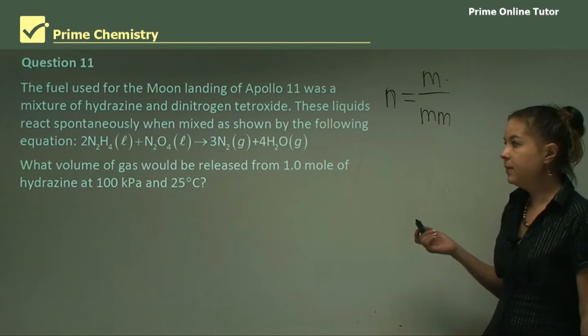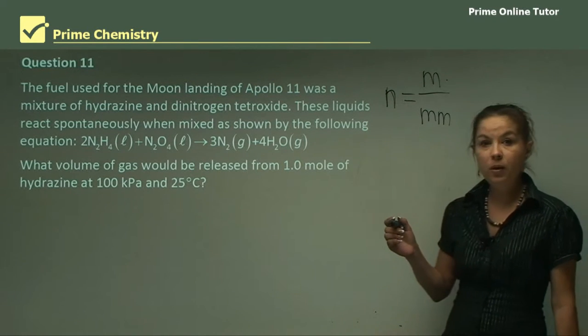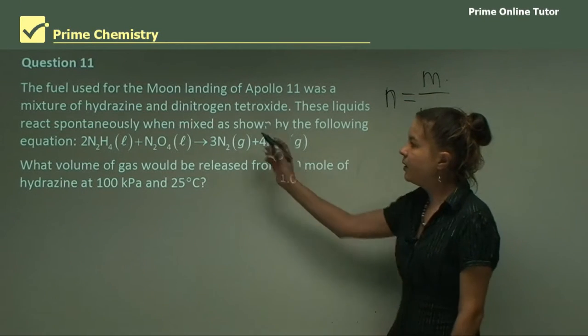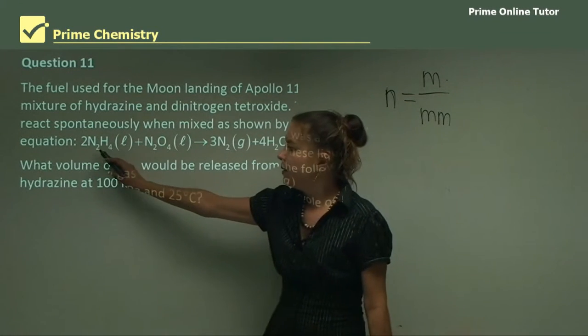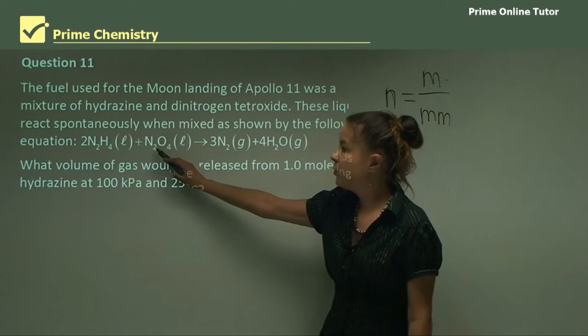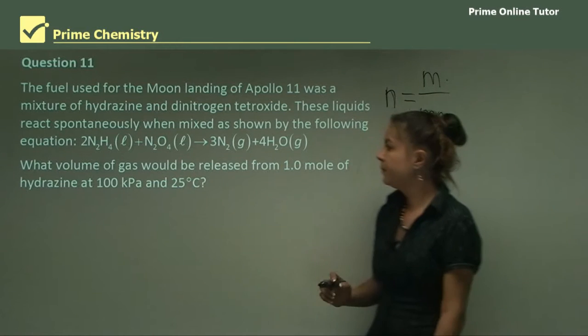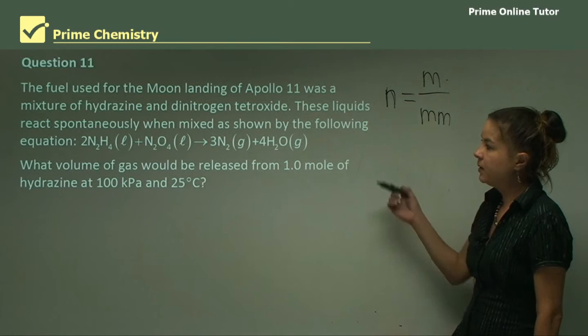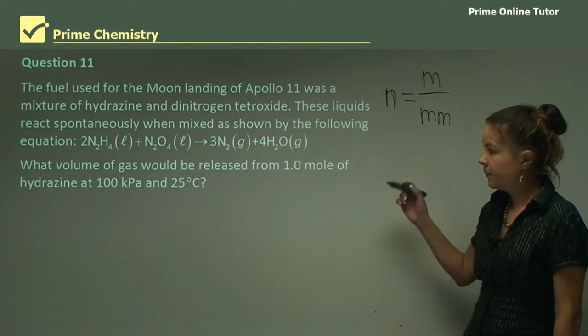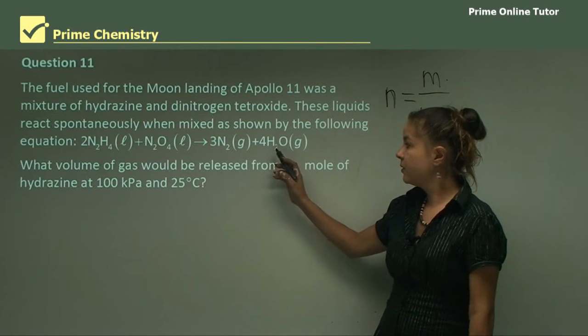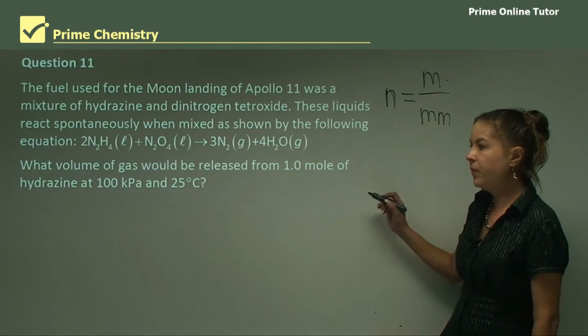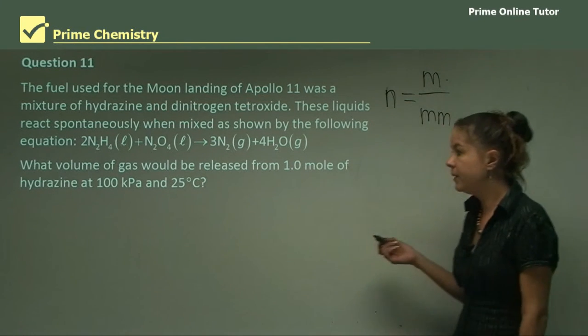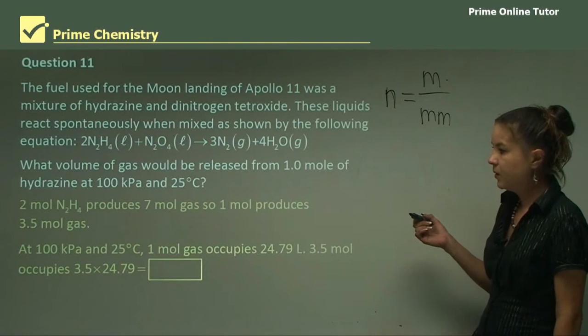And question 11. The fuel used for the moon landing of Apollo 11 was a mixture of hydrazine and dinitrogen tetraoxide. Now, this compound here is hydrazine, and this one here is dinitrogen tetraoxide. So these liquids react spontaneously when mixed, as shown by the following equation. And they go on to produce nitrogen gas and water. What volume of gas would be released from one mole of hydrazine at 100 kilopascals and 25 degrees? So let's have a look.